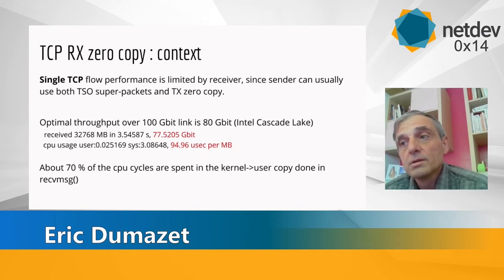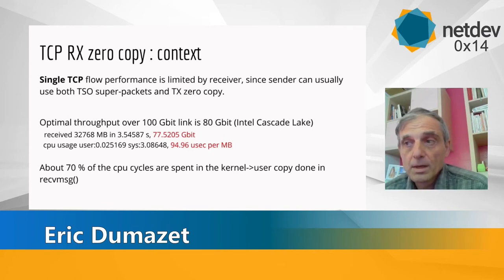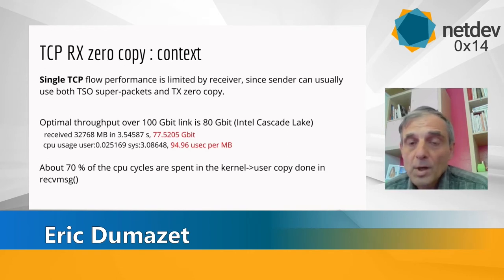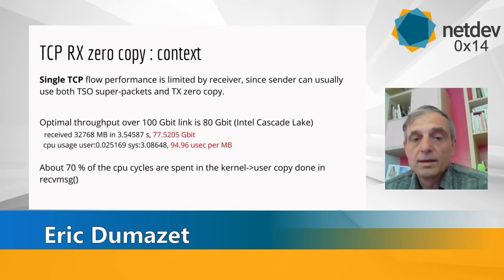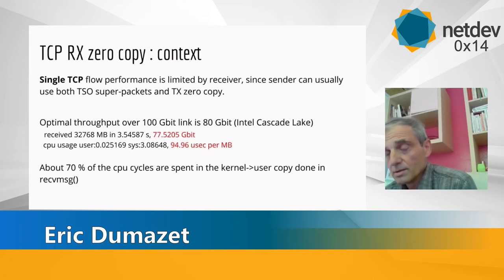If you are really interested in the optimal performance of a single TCP flow, with 100 Gbps and more speed you now have on link rates, the bottleneck is really the copy we have in recvmsg. In this particular example, if you try to reach the maximum throughput for one 100G NIC, on the current generation of Intel CPUs you are basically limited to 80 Gbps. The receiver is spending about 70% of the cycles doing just a copy from kernel to user.